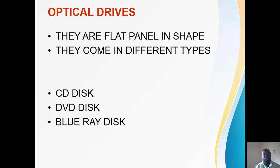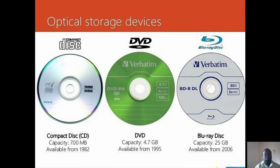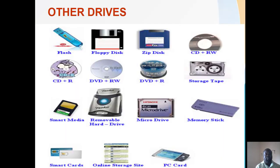We talked about optical drives — flat panel in shape, coming in different types: CD, DVD, and Blu-ray discs. We also covered other drives: floppy diskettes, zip drives, flash drives, CD-R, CD-RW, DVD writers, and tape drives. These are all forms of devices used for storing and keeping files for future use.